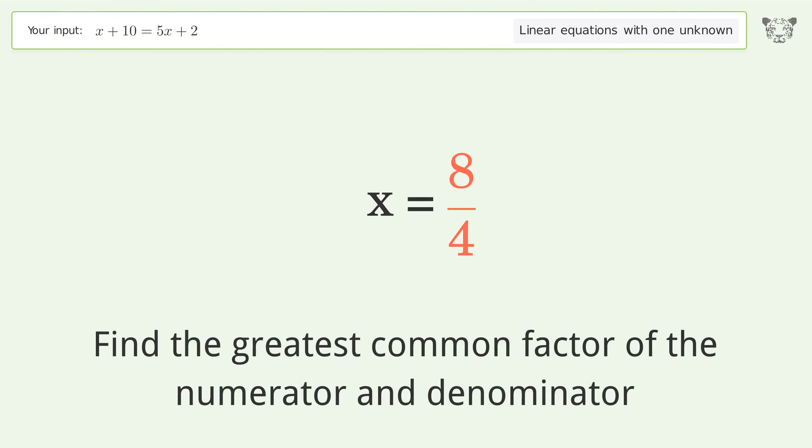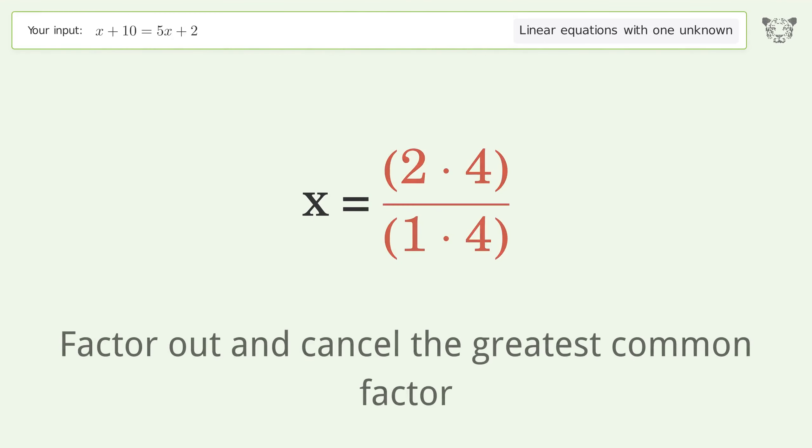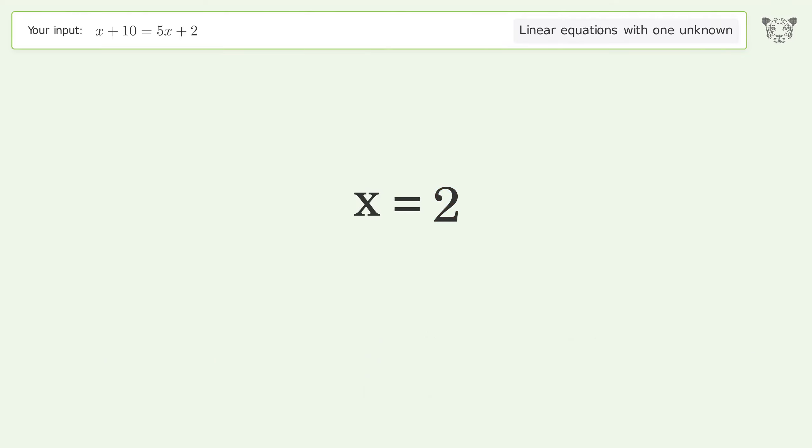Find the greatest common factor of the numerator and denominator. Factor out and cancel the greatest common factor. And so the final result is x equals 2.